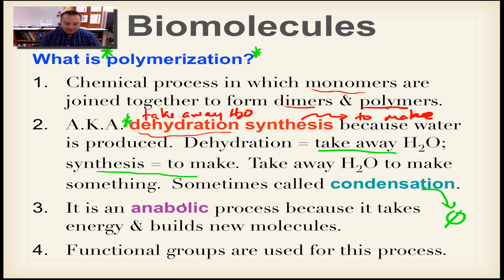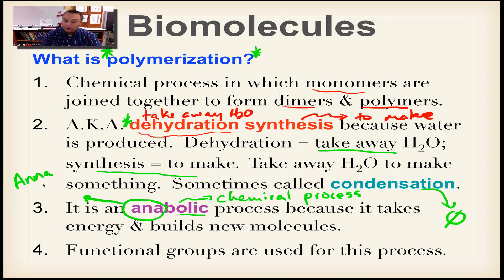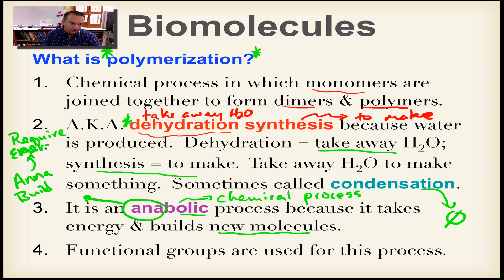Polymerization and dehydration synthesis are also called an anabolic process. The '-bolic' part simply means a chemical process, but focus on the 'ana' part — 'ana' means to make. A great way I remember this is the girl's name Anna: Anna builds something. In order to build a new molecule, that requires energy. Think of building a house — you spend a lot of energy hammering nails, sawing wood. Any anabolic process builds a new molecule and that takes energy.